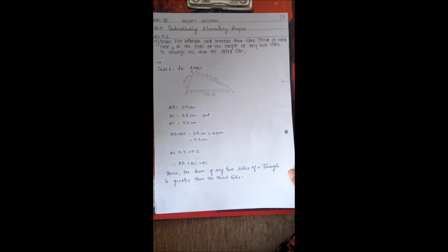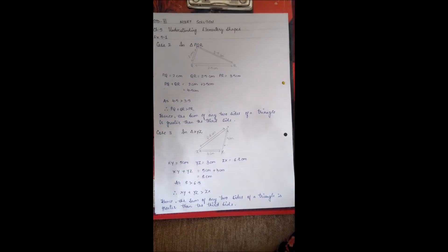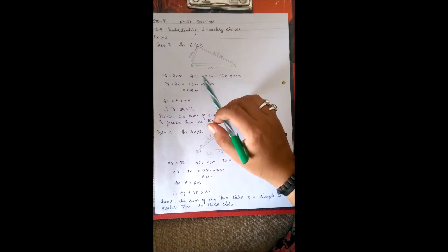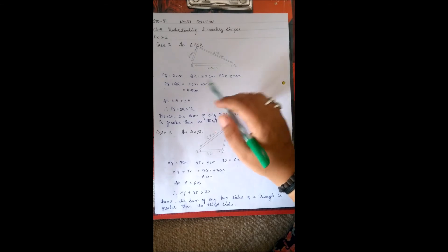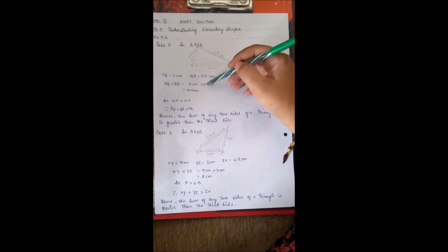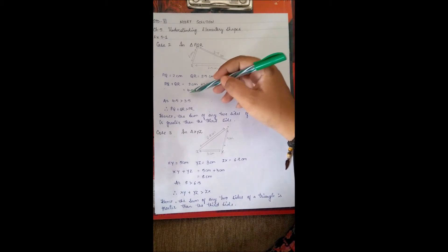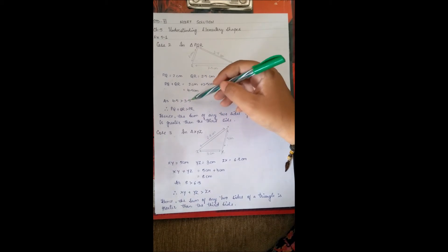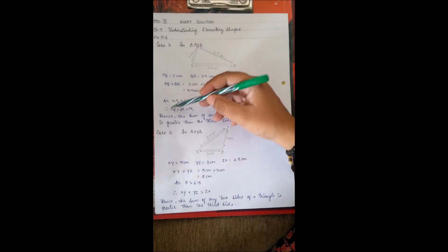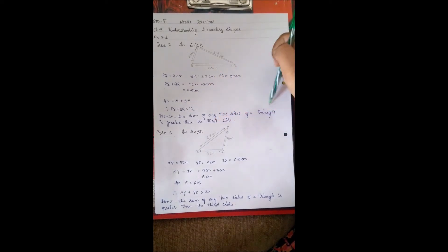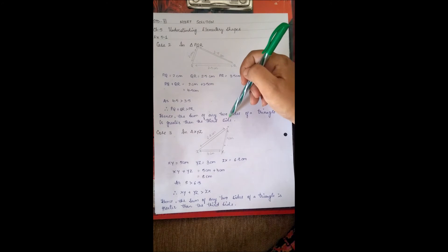Case 2 — Triangle PQR: PQ = 2 cm, QR = 2.5 cm, PR = 3.5 cm. PQ + QR = 4.5 cm, which is more than 3.5 cm. Therefore PQ + QR > PR. Hence the sum of any two sides of a triangle is greater than the third side.